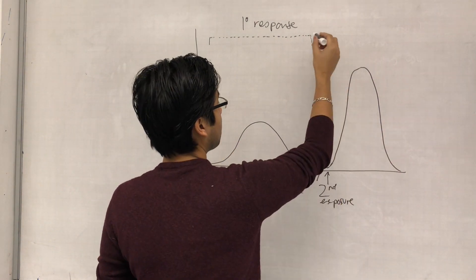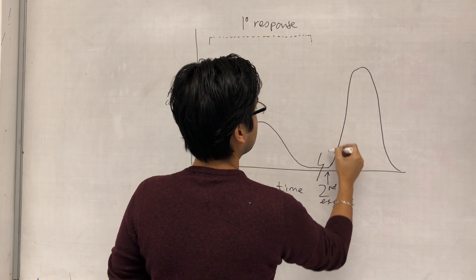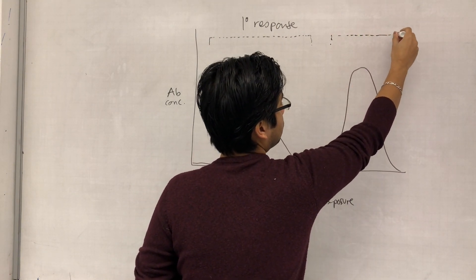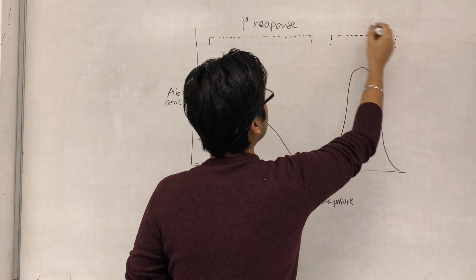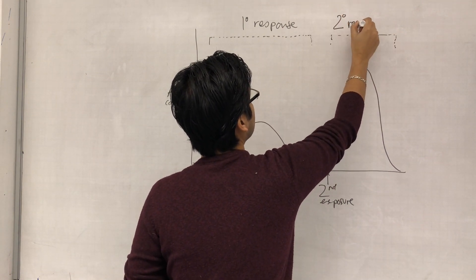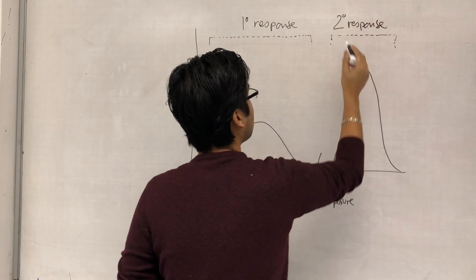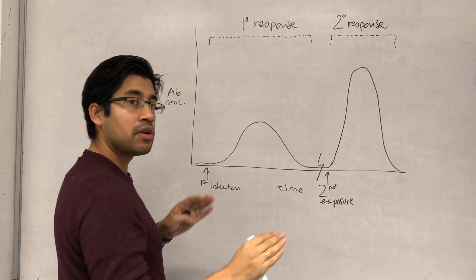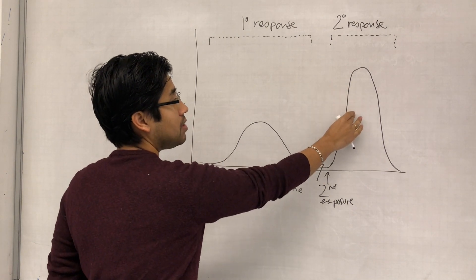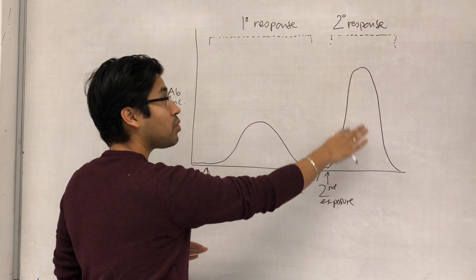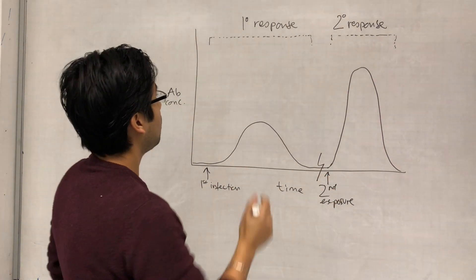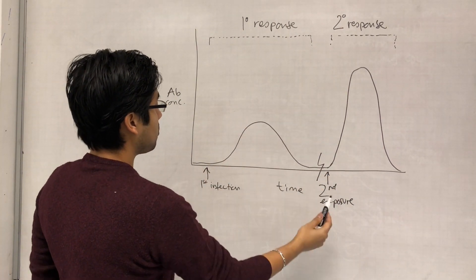The secondary response is much faster and much bigger, and this is what it looks like in graphical terms - our second exposure begins roughly there. This secondary response is due to the pre-existence of T memory and B memory cells, which is what allows that second response to be different in this way.